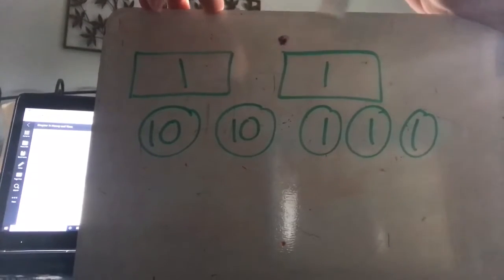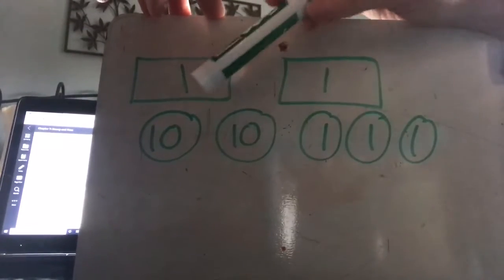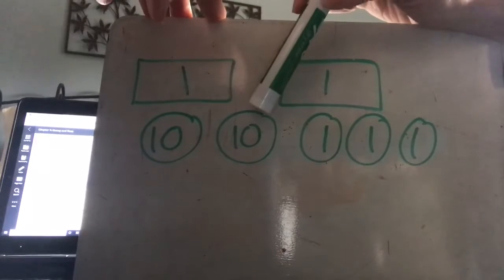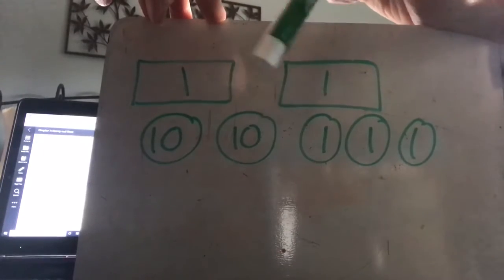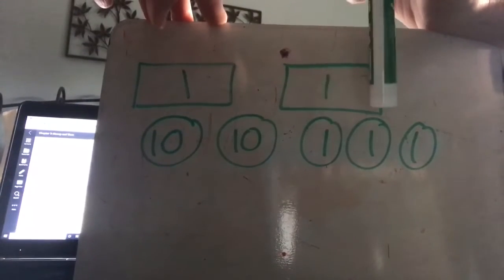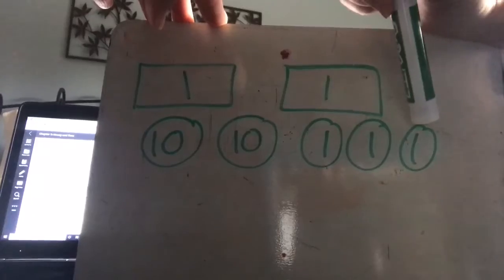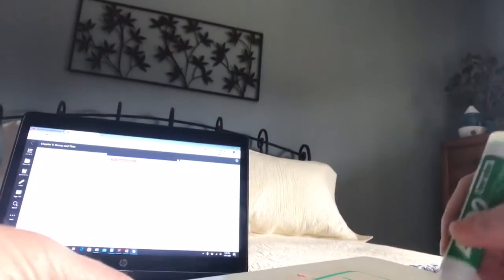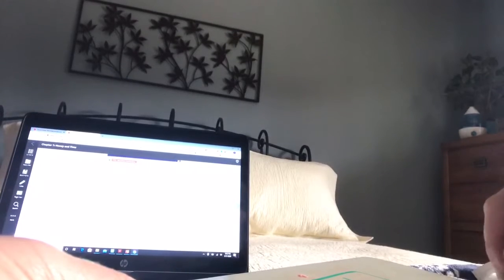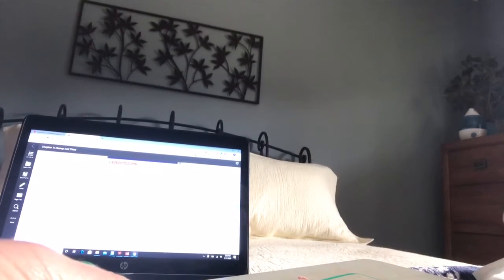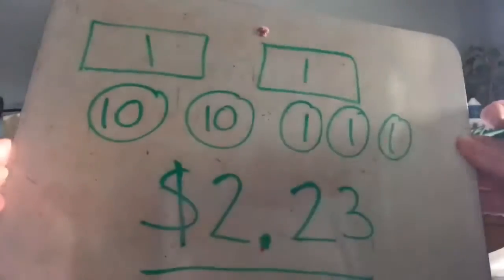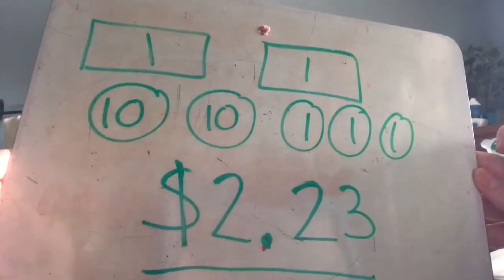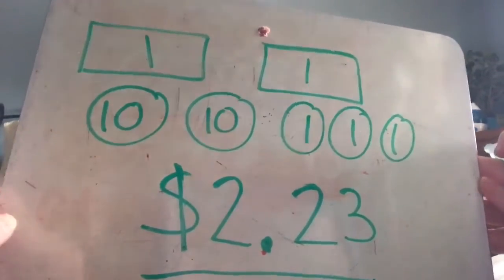So I would count: one dollar, two dollars, two dollars ten, two dollars twenty, two dollars twenty-one, two dollars twenty-two, two dollars and twenty-three cents. When I write that, I want to make sure I write with a dollar sign and a decimal point. So that's what my problem should look like in my book.